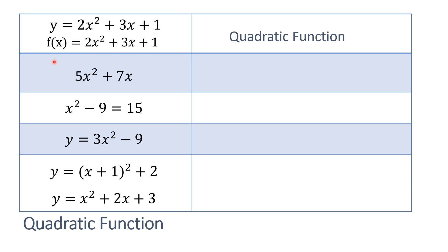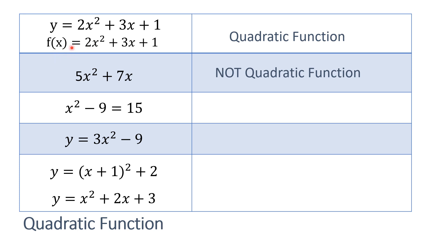So it can also be written as f of x or function of x is equal to 2x squared plus 3x plus 1. Such an example — wherever it is written, it is a quadratic function, because we are giving a function to your variable x. So, it is a quadratic function.